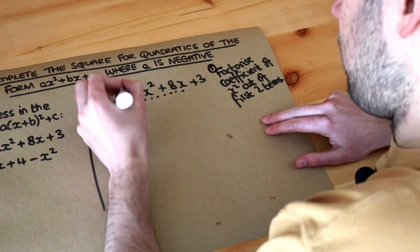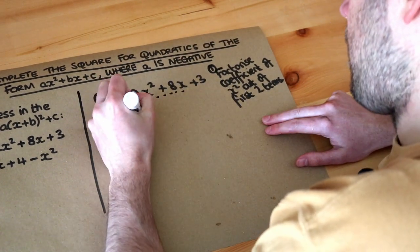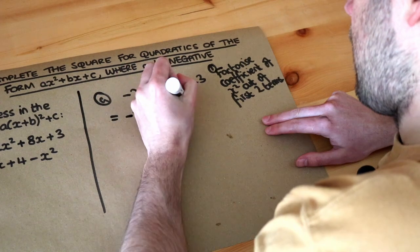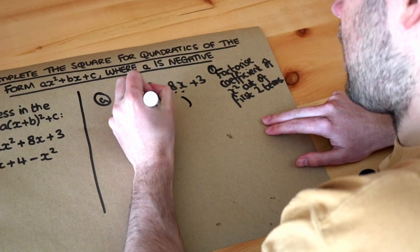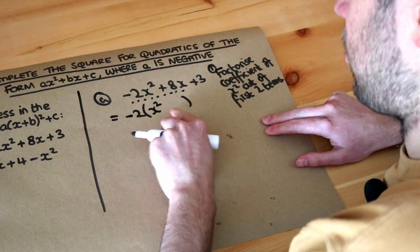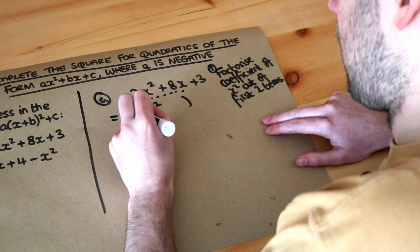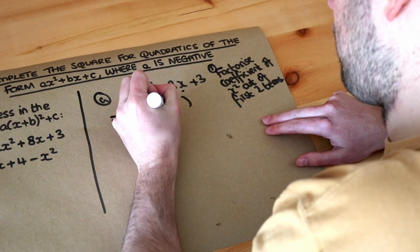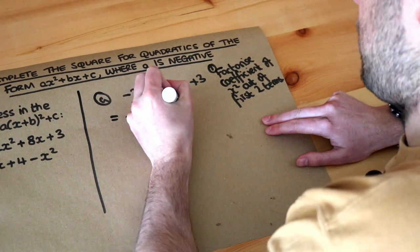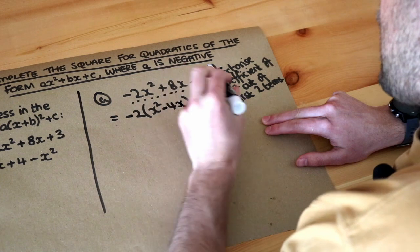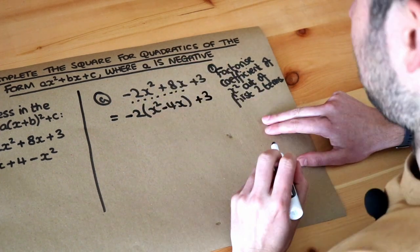So if we do that with -2x² + 8x + 3, we factorize out the minus 2. That gives us minus 2 times (x squared minus 4x), because minus 2 times minus 4 gives you 8. And we still have the plus 3 on the end — we can just leave it alone.